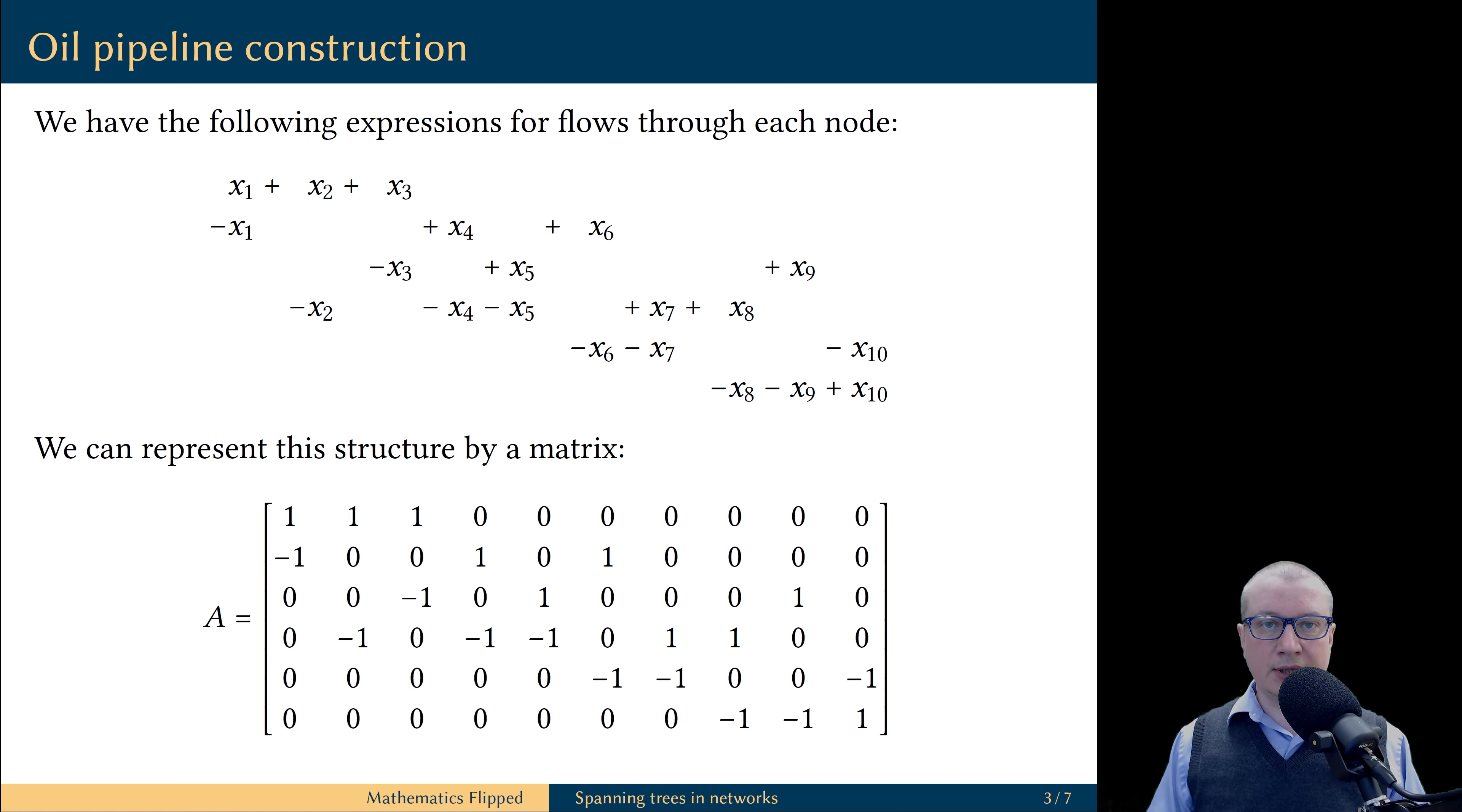Moreover, each column contains zeros, one entry is equal to one, and one entry equals to negative one. For example, let's look at column number one.